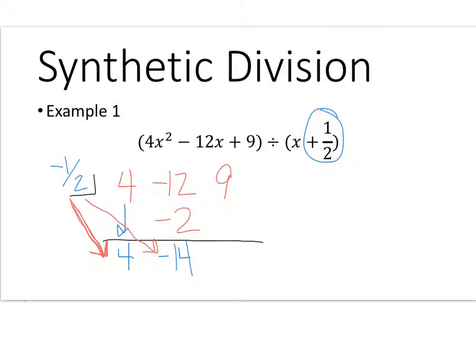So negative one half times negative 14 is positive 7. So then 9 plus 7 is 16. So this is my remainder. The last term is always your remainder.